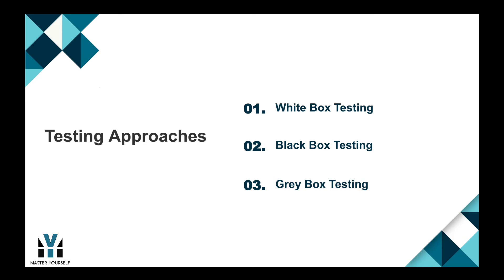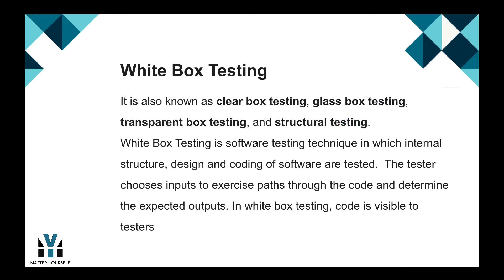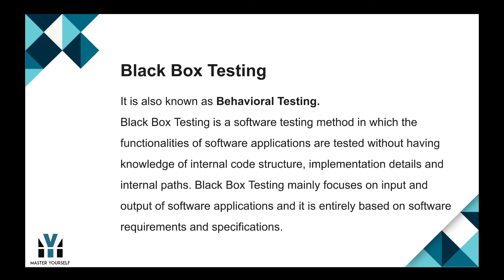There are three types of testing approaches: white box testing, black box testing, and gray box testing. White box testing is also known as clear box testing, glass box testing, transparent box testing, and structural testing. It is a software testing technique in which the internal structure, design, and coding of software are tested. The tester chooses inputs to exercise paths through the code and determine the expected outputs.